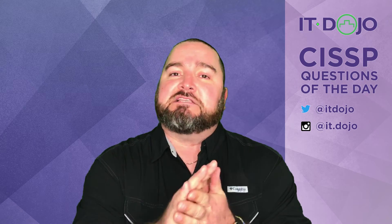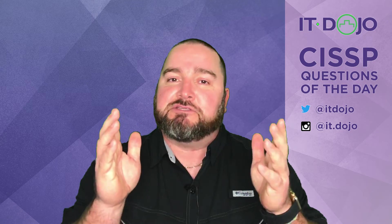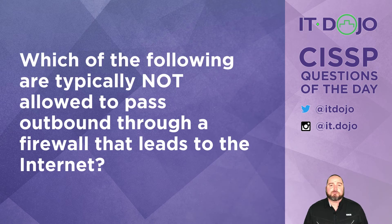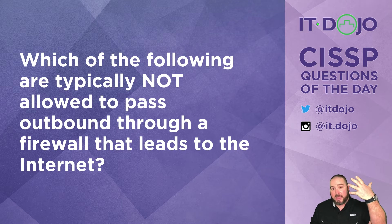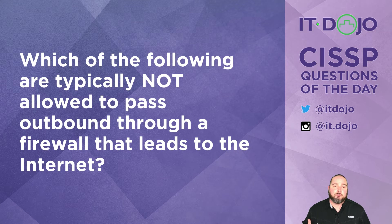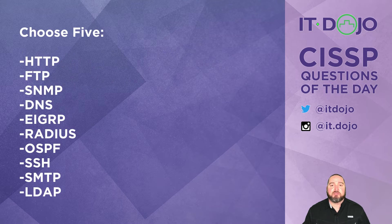Hey, what's going on — welcome back CISSP wannabes. These are the IT Dojo CISSP questions of the day, where each and every day you get two questions to ponder and contemplate. I'm Colin Weaver. First question today: in the world of firewalls, which of the following — pick five — are typically not allowed to pass outbound through a firewall heading out toward the internet?